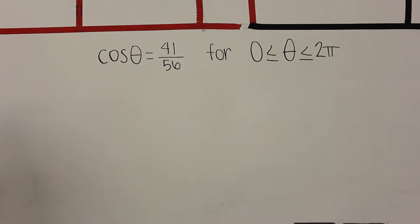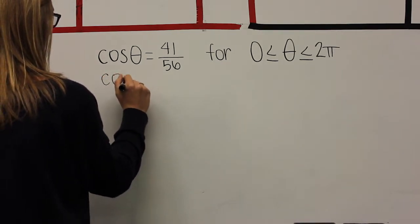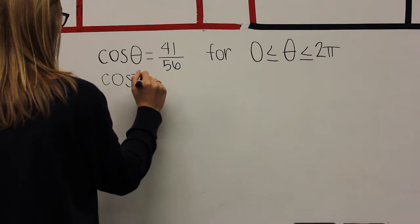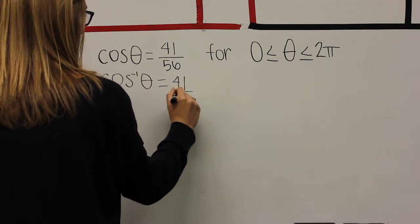The first problem is cosine equals 41 over 56. To do inverse cosine, you have to type the second button on your calculator and then cosine. The inverse cosine would still be 41 over 56.